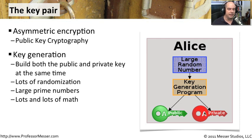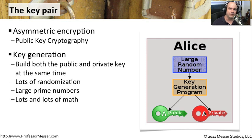There is nothing that looks the same about them. You would not be able to discern the public key if you had the private key, and vice versa. That is one of the things that makes this so powerful — there is a mathematical relationship between them, but from the outside they look very, very different. It becomes very difficult to understand what might be encrypted unless you have the private key.